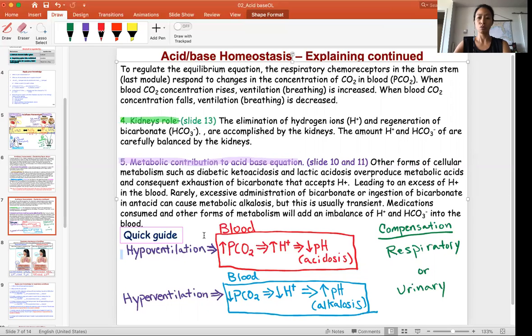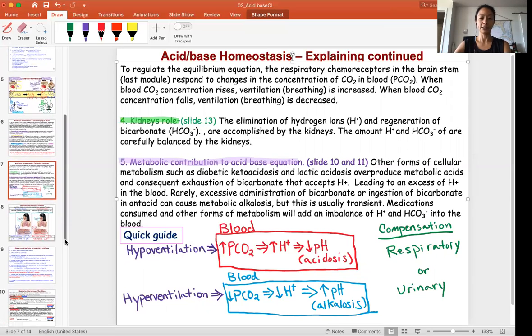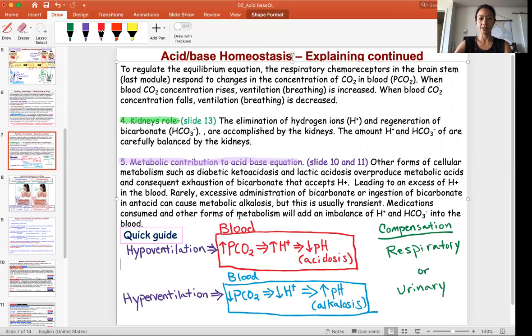The reverse can happen with alkalosis. So this is acidosis and this is alkalosis. You have to really think about what is the action and what is going on in the blood. Now of course we have compensatory mechanisms with the respiratory and the urinary system. This explains the equation.